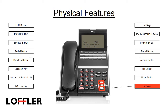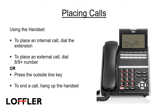The volume button allows you to adjust volume control for your handset, speaker, ringer volume, and brightness of the LCD display. To place a call using your handset, pick up your handset and dial the extension. To place an external call, dial the trunk access code — 8 or 9 — and then the number, or press the programmed button or outside line key. To end a call, hang up the handset.